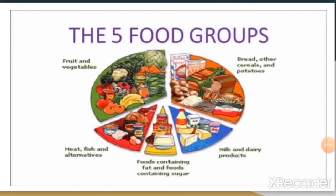The key to healthy eating is to enjoy a variety of nutritious food from each of the 5 food groups, in the proportion that you should be eating them throughout your day. If you eat a variety of foods from each of these food groups, your body will receive all the nutrients and vitamins it needs to function. Foods from the basic food groups provide the nutrition essential for life and growth — these foods are also known as everyday foods.